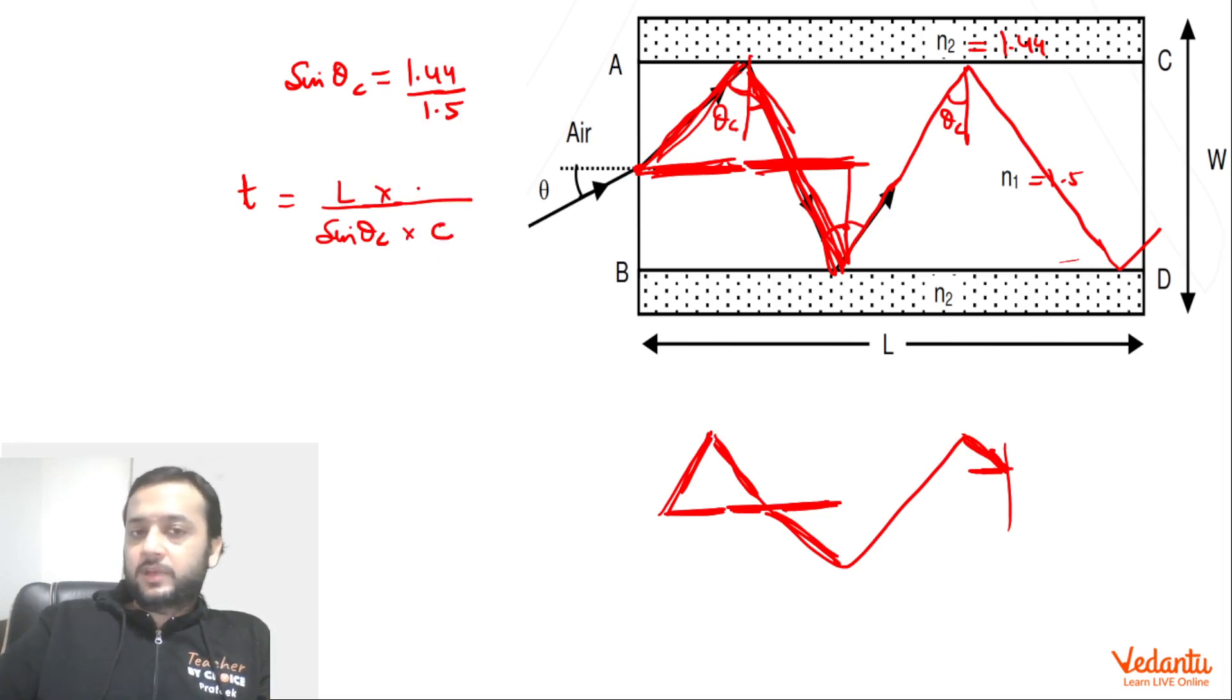Now just put the values. L was given as 9.6 divided by sin theta c is 1.44. 1.5 will go in the numerator but n1 was already present, so it will be 1.5, and this is 3 into 10 to the power 8. When you solve this, the time you are going to get is 50 into 10 to the power minus 9 seconds.